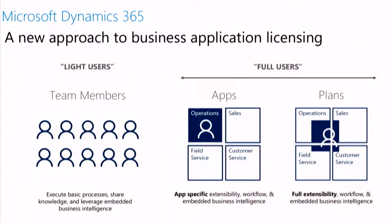We do have two plans. The idea of Plan Two, which is symbolized here, is that you get more or less everything we have. The full user Plan Two is Operations — known as AX — plus Sales, plus Field Service, plus Customer Service, and more. That is more or less the complete CRM story plus the complete AX story in one user. The idea is that if you have people doing more than just operations, we make it easy for them to get everything on the Dynamics side.